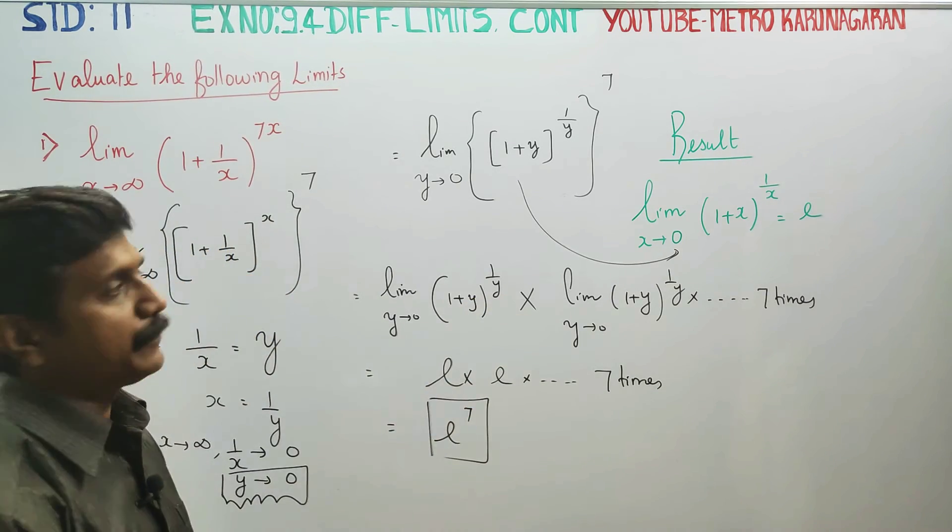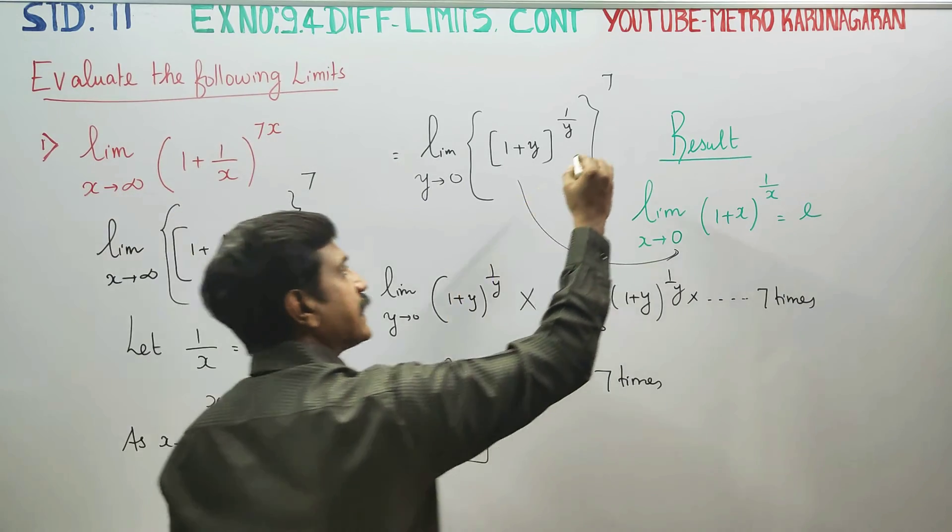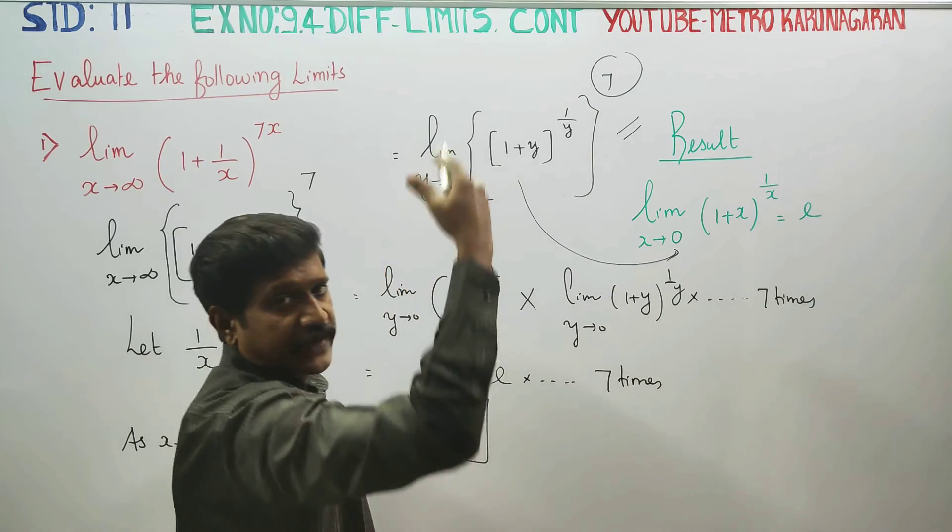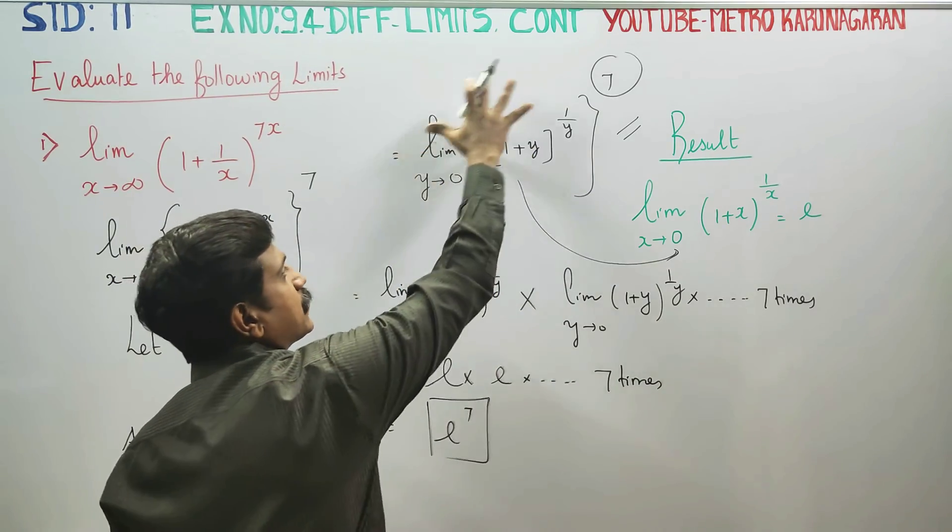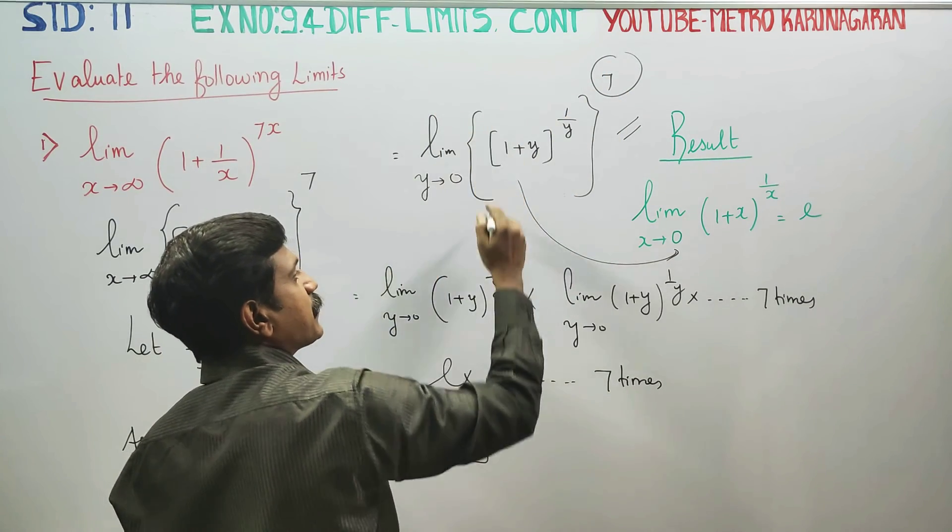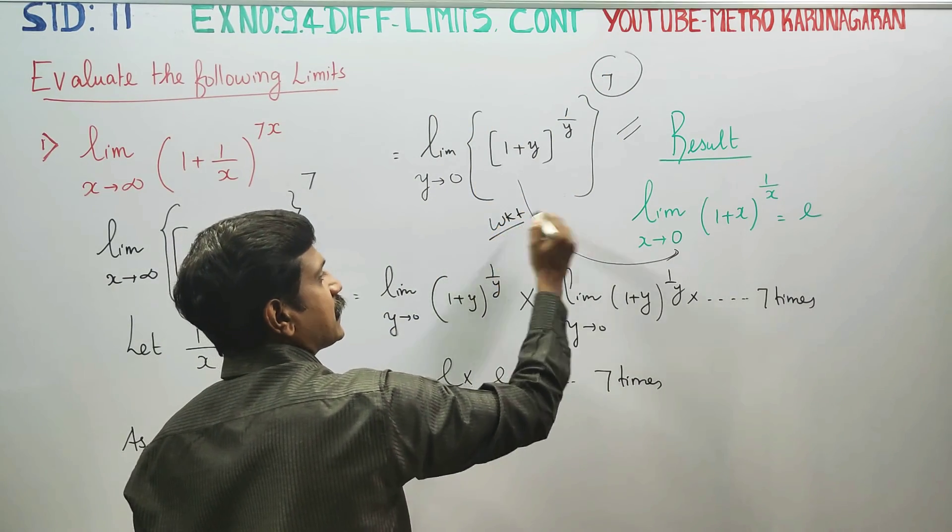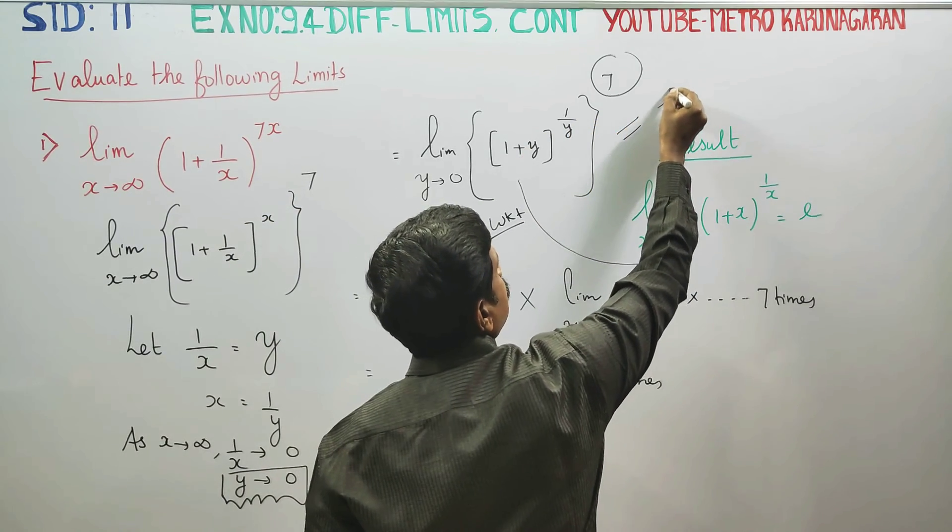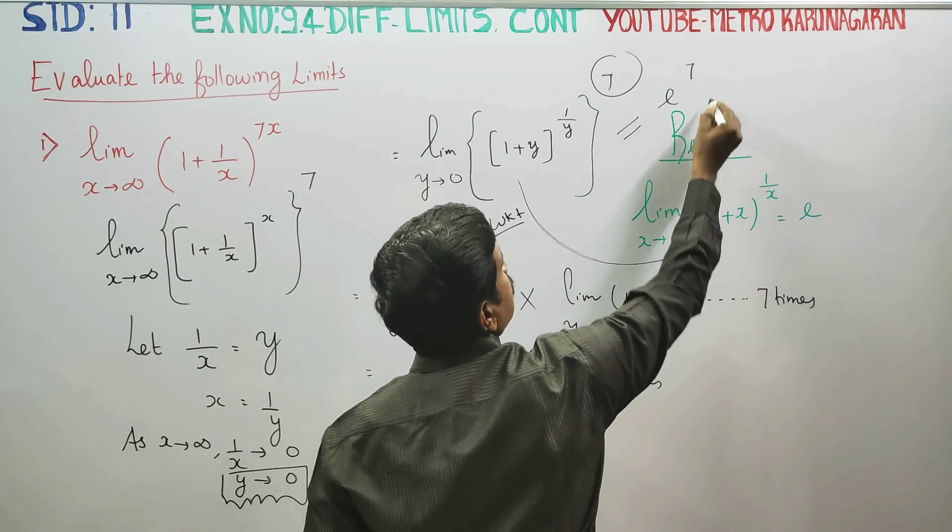In the working, this is your answer. You can write it directly: whole power 7, or apply the power. But this is the limiting case we should know, that the answer is e power 7.